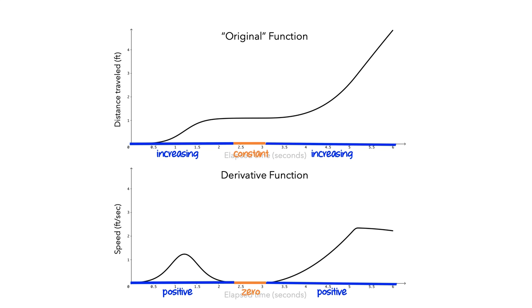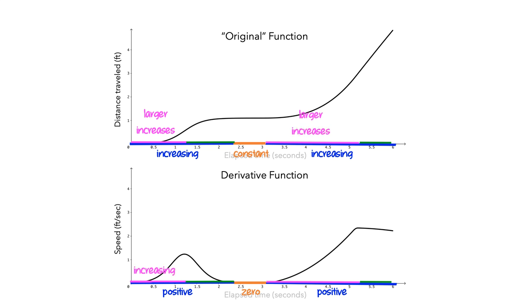You might have noticed that between t equals 0 and t equals roughly 2.25, the distance function was initially increasing faster and faster, and then increasing more slowly. Thus, until t equals 1.25, the value of the derivative function was increasing, and then it was decreasing. Similarly, between t equals 3.25 and 5.25, the distance function was increasing faster and faster, and then, after the throw, the distance was increasing more slowly. So we can summarize: if the function increases by larger and larger amounts as time increases, then the value of the derivative is increasing for the corresponding times. Similarly, if the function increases by smaller and smaller amounts as time increases, then the value of the derivative is decreasing for the corresponding times.